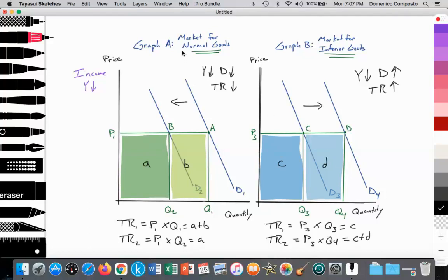Total revenue for normal goods is TR1 equal to price P1 multiplied by quantity demanded Q1, equal to area A plus B. This rectangular area here. And in the market for inferior goods, we see TR1 is P3 times Q3 which is equal to surface area of C.